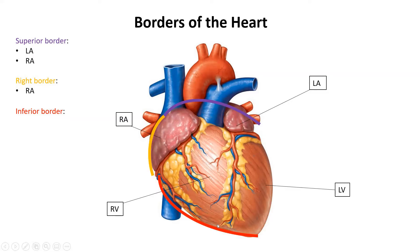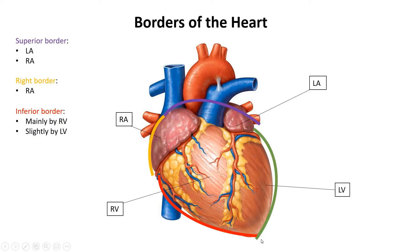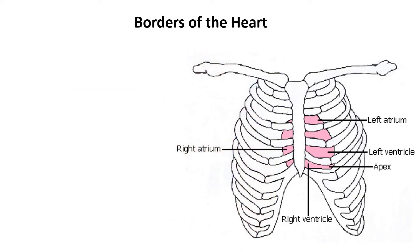Next we have the inferior border — most of it is made up of the right ventricle, but part of it is also made up of the left ventricle, in particular by the apex. The final border is the left border, and almost all of it is made up of the left ventricle.